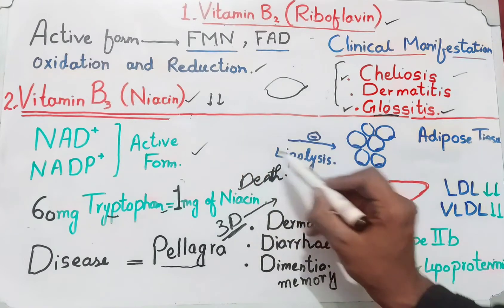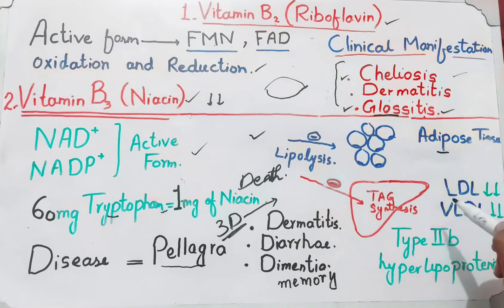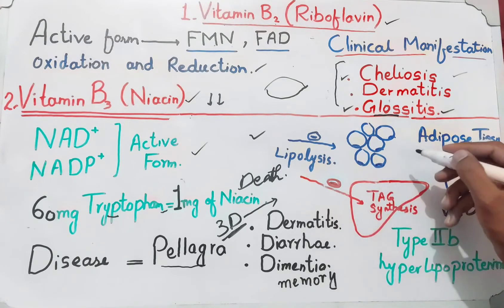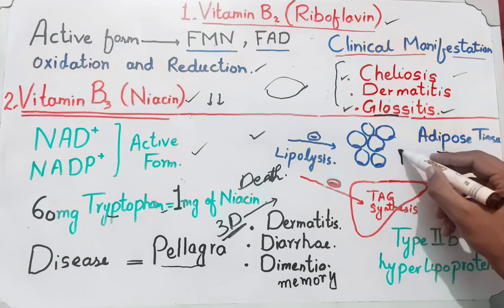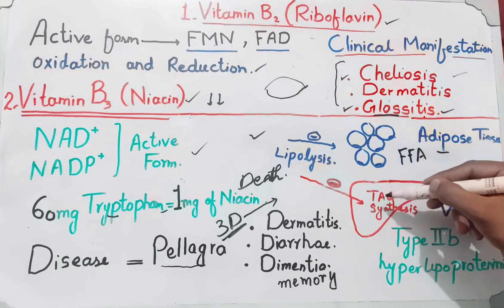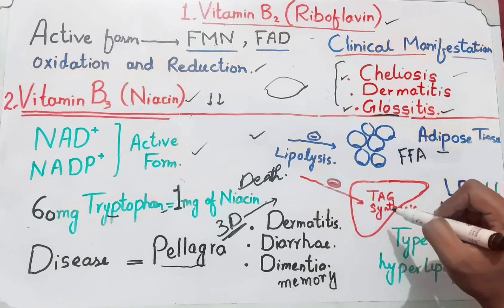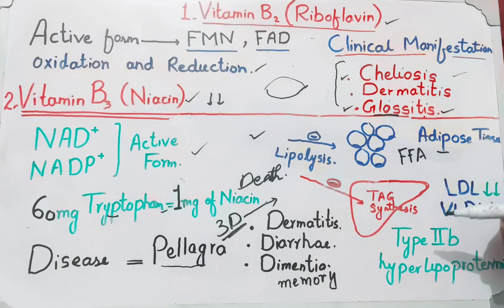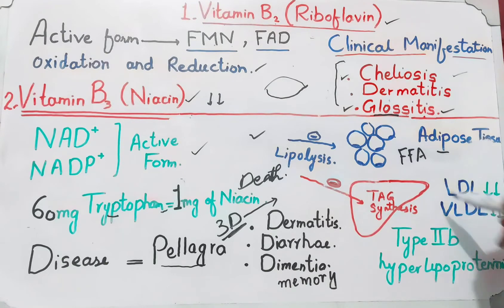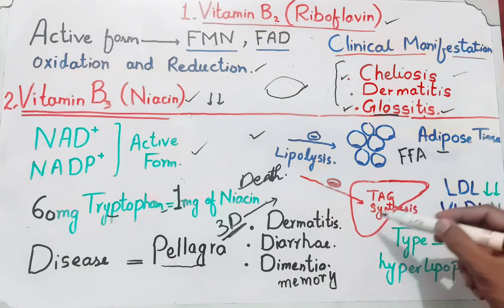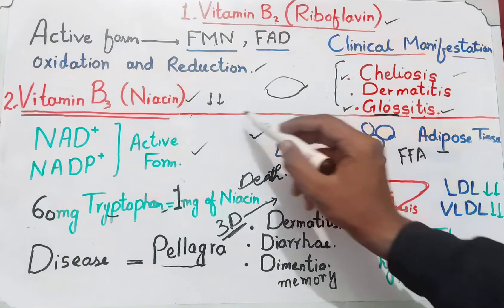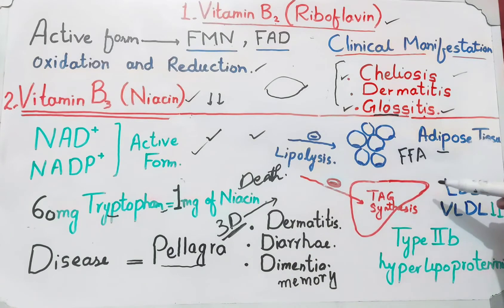Niacin acts on two tissue sites. First, in adipose tissue, it inhibits lipolysis, meaning there is decreased production of free fatty acids. These free fatty acids cannot be taken up by the liver, so formation of LDL and VLDL is reduced. Second, niacin may also inhibit TAG synthesis in the liver, further decreasing LDL and VLDL concentrations. Since both LDL and VLDL are elevated in type 2b hyperlipoproteinemia, vitamin B3 is used in its treatment.